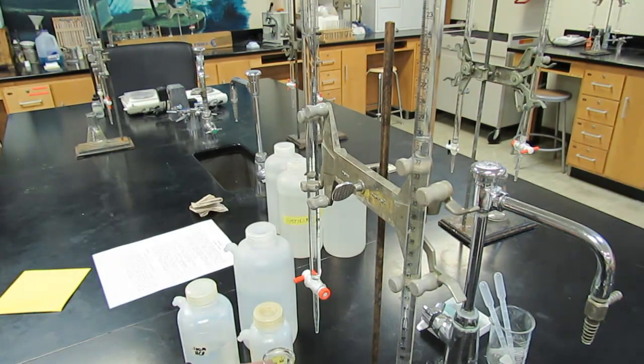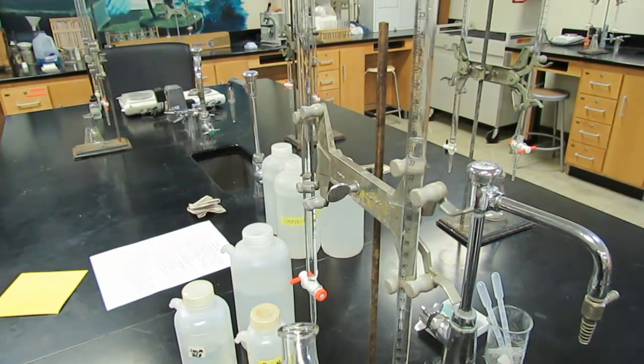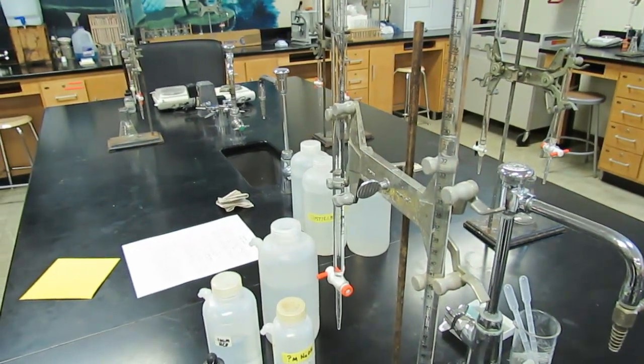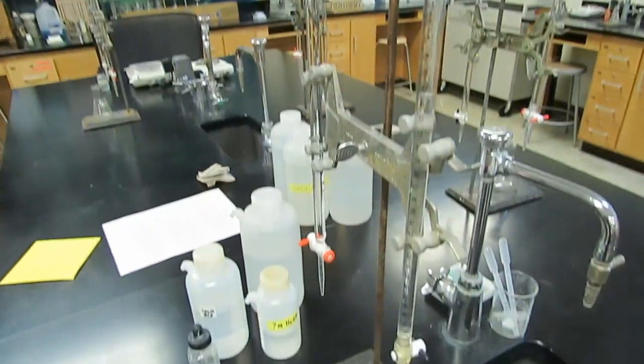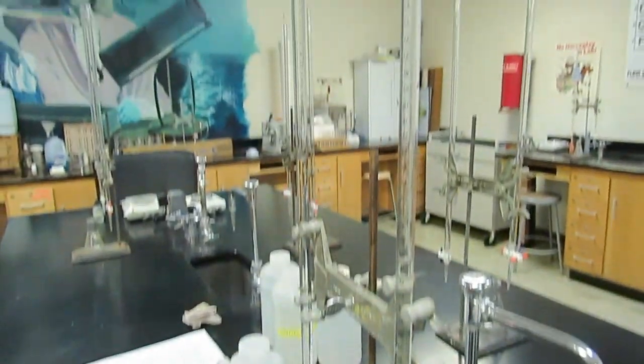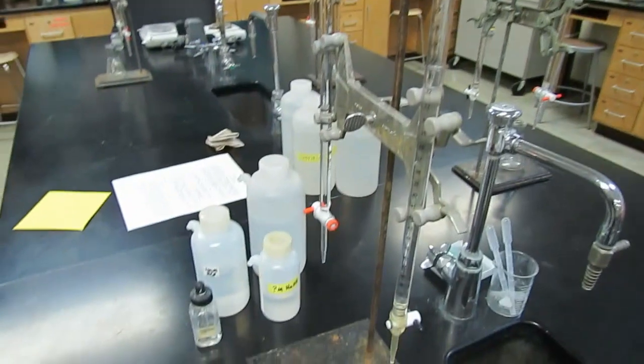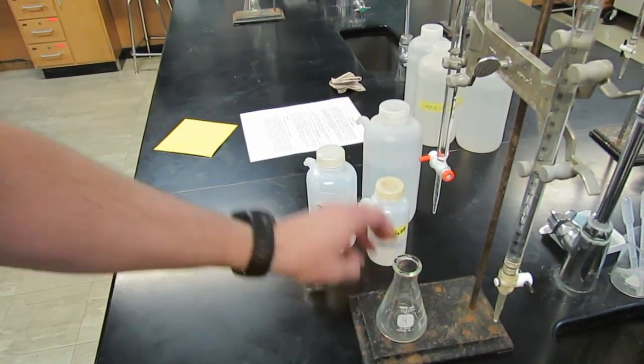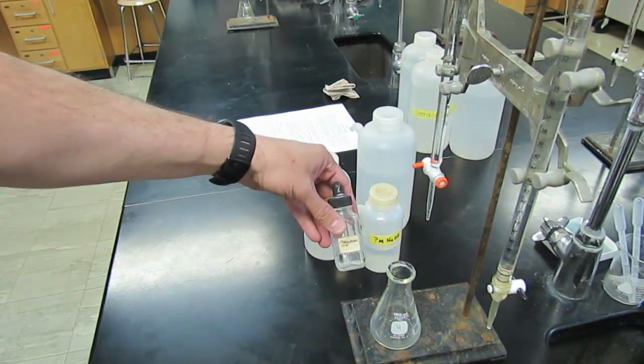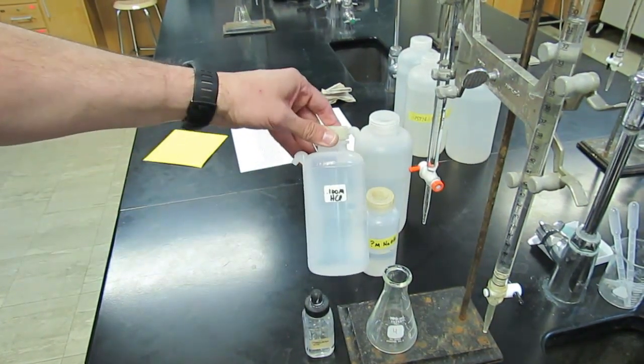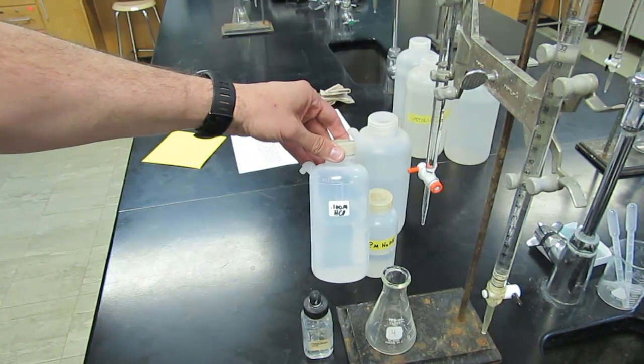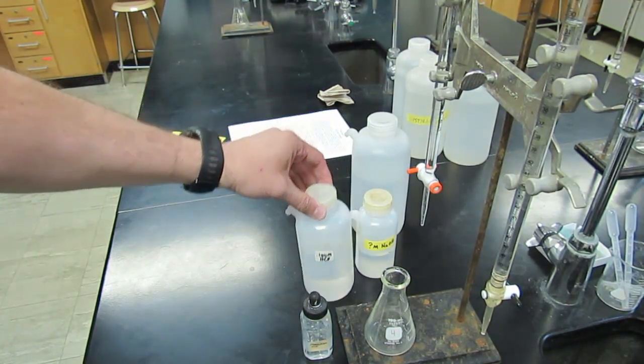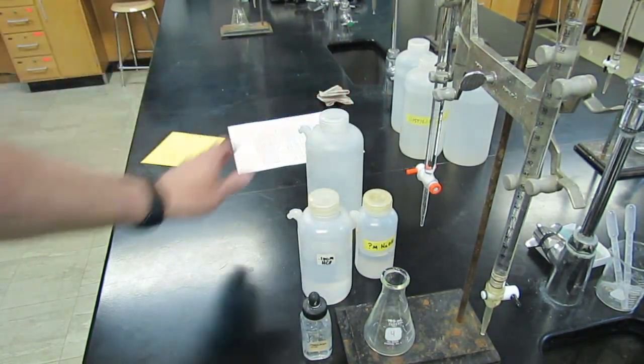Welcome. Today we're going to be doing an acid-base titration. We have some pretty standard equipment here. We'll be using these burets. We'll talk about how those are used during the experiment. We have a 125 milliliter Erlenmeyer flask, some phenolphthalein indicator, some 0.100 molar hydrochloric acid, and a bottle of distilled water.